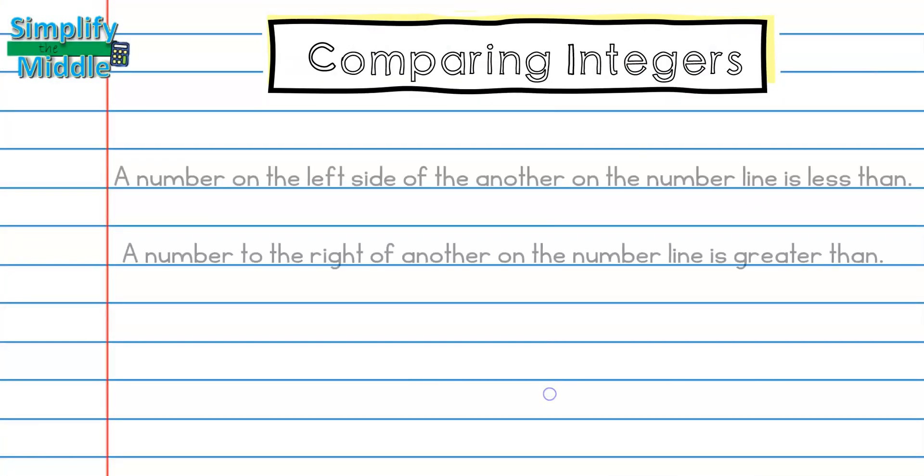Let's recap. A number on the left side of another on the number line is less than. A number to the right side of another on the number line is greater than.